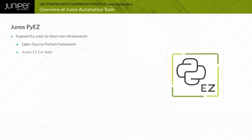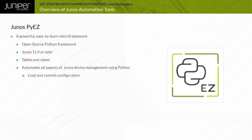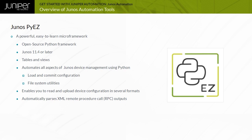Junos PyEZ is a powerful open-source Python library that is easy to learn and use. It enables you to automate all aspects of Junos device management, including configuration, monitoring, software upgrades, file system maintenance, and so on using Python. Junos PyEZ enables you to read and upload device configuration in several formats, including text, XML, JavaScript Object Notation or JSON, or Junos set commands. It parses all XML remote procedure call or RPC outputs automatically. Multiple utilities are also included to help with maintenance tasks.